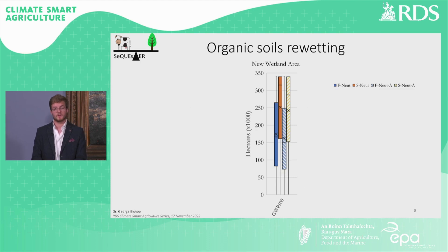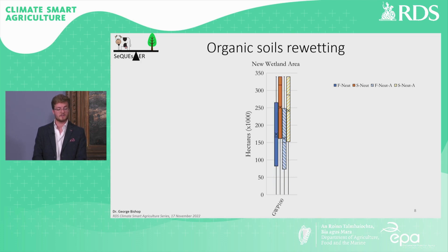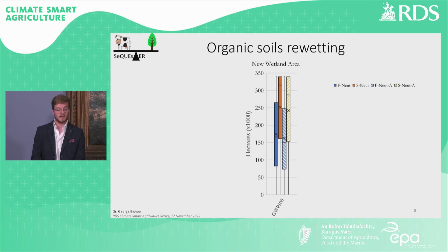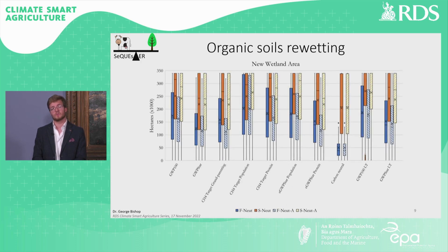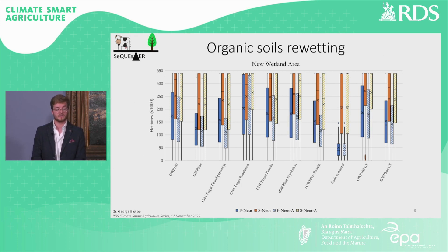In a similar way, for this GWP100 metric we show the spread of 3,000 scenarios for those which exceeded neutrality and failed neutrality, as well as the abated scenarios. The scenarios which succeeded in achieving neutrality had considerably higher new wetland area than those which failed. This trend was seen across all definitions of neutrality, where scenarios which did not achieve neutrality had considerably lower organic soil rewetting.